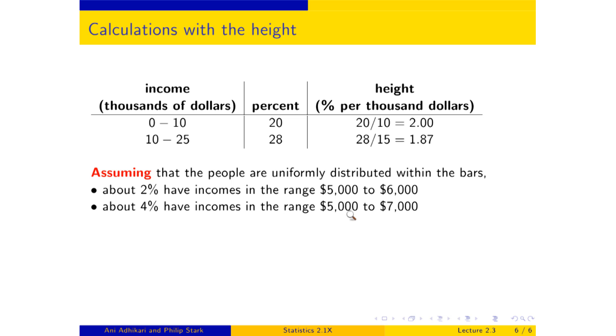This is an interval of width 2, and for each one of those units, you have 2% of the people, and so then 4%. If you look at the next interval, then in the range $14,000 to $15,000, that's a $1,000 increment in the second interval, you have 1.87% of the people, roughly.